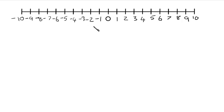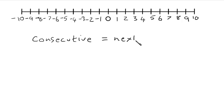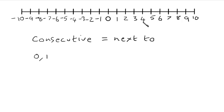There's one other word we need to be familiar with when talking about integers, and that's the word consecutive. Consecutive simply means next to. So when we're talking about numbers, consecutive means numbers next to each other. So if we look at our number line, 0 and 1 are consecutive numbers. 2 and 3 are next to each other — those are consecutive integers. 3 and 4 are consecutive, 4 and 5 are consecutive, and so on. Down here, negative 4 and negative 5 are consecutive whole numbers, or consecutive integers.